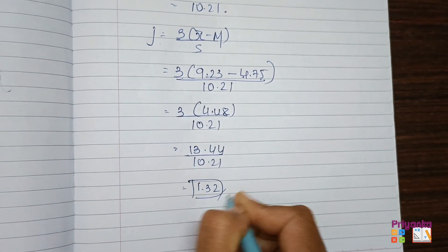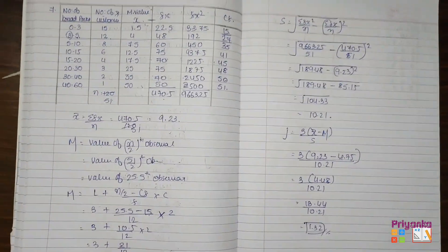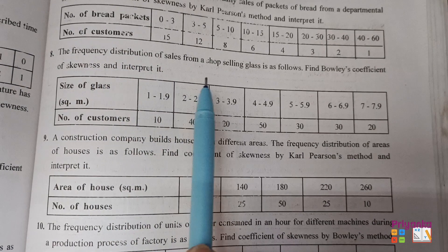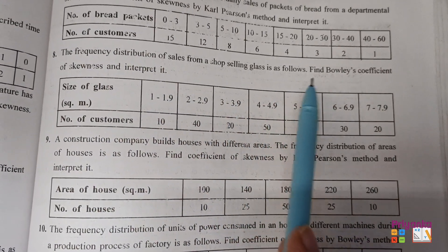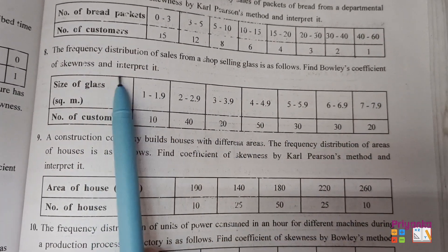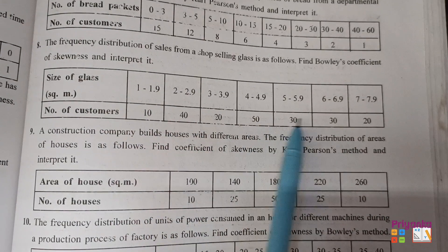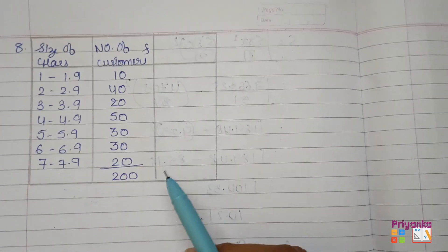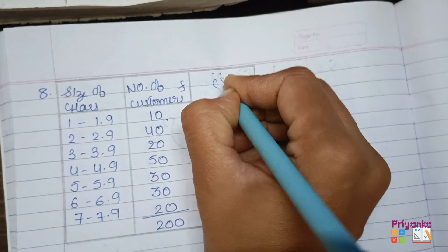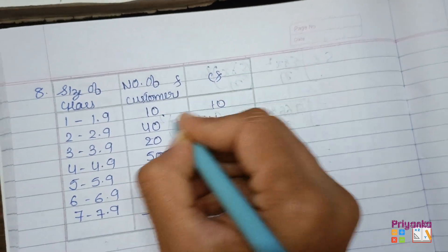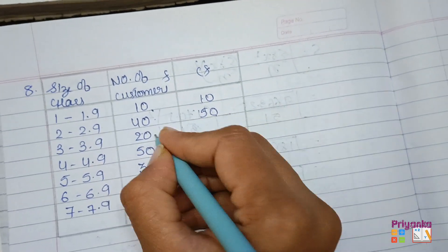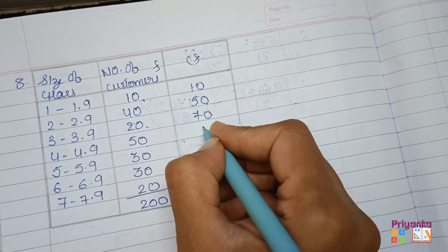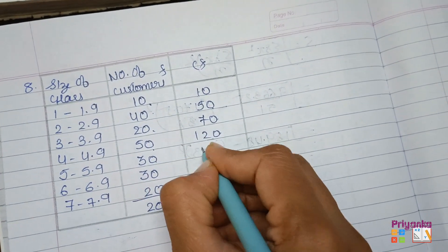Moving to question number eight: the frequency distribution of sales from a shop selling glass is given. Find Bowley's coefficient of skewness and interpret it. Since this uses Bowley's method, we only need the cumulative frequency. CF column: 10, 10+40=50, 50+20=70, 70+50=120, 120+30=150, 150+30=180, 180+20=200.